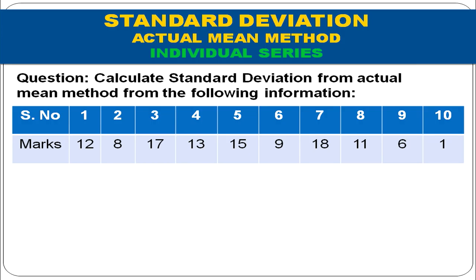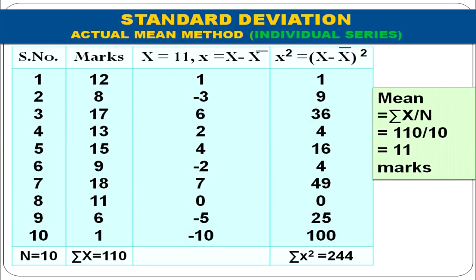Calculate standard deviation by the actual mean method from the following information. The serial numbers are 1 to 10 and the marks are 12, 8, 17, 13, 15, 9, 18, 11, 6, and 1. The first step is to calculate the mean: mean = Σx / n = (12 + 8 + 17 + 13 + ... ) = 110 divided by 10 gives us mean = 11 marks.